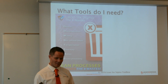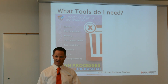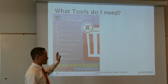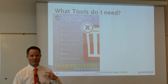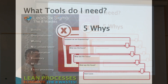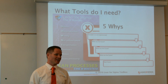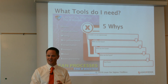Then teach them about the eight wastes. The Toyota Production System originally had seven; we Americans made it eight. The acronym is DOWNTIME: Defects, Overproduction, Waiting, Not using employee talent, Transportation, Inventory, Motion, and Excess processing. Also teach the Five Whys — asking why five times until you get to the root cause of a problem. If you teach your team those three things, you'll solve 99% of the problems you're running into.